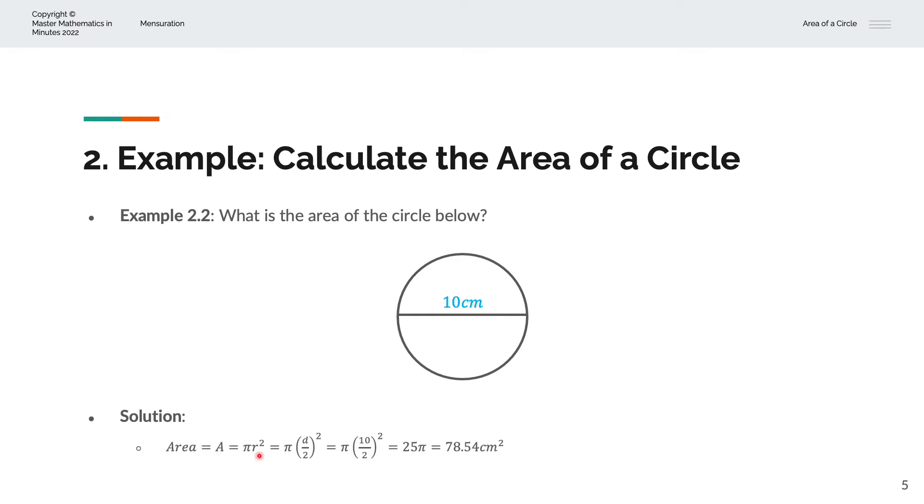So we have the area is equal to A, and that is equal to πr squared. And r, which is the radius, is the diameter divided by 2. We'll copy the π over and we'll square that as well.